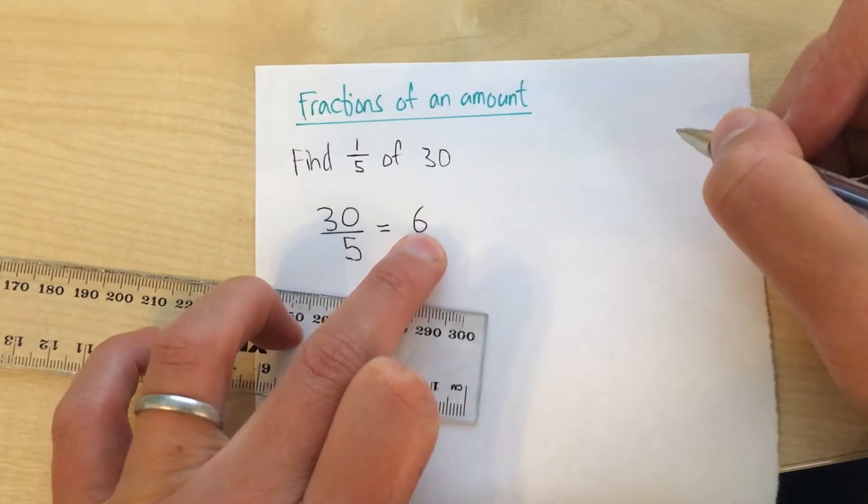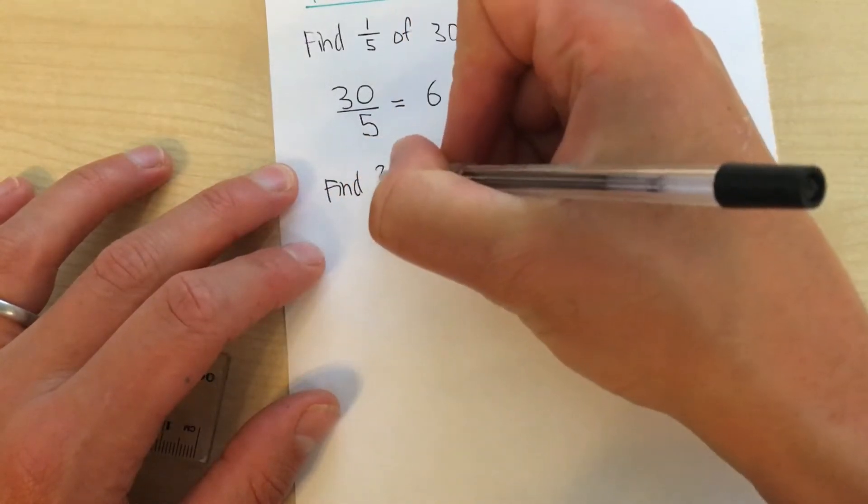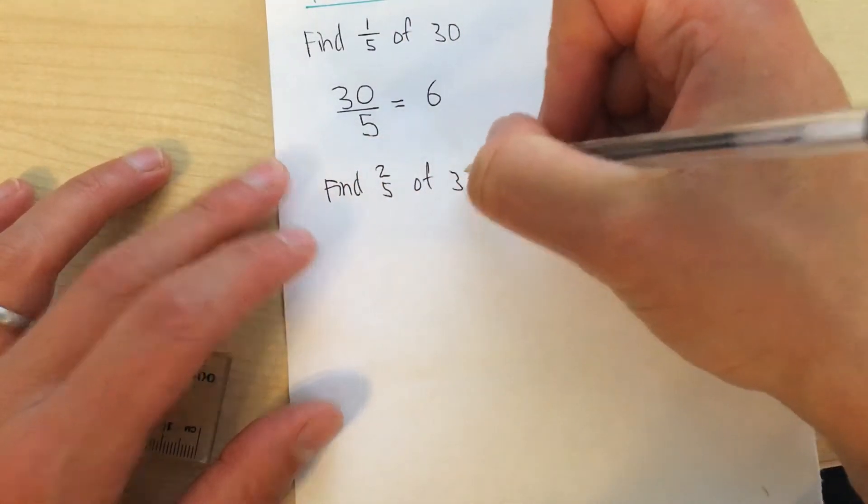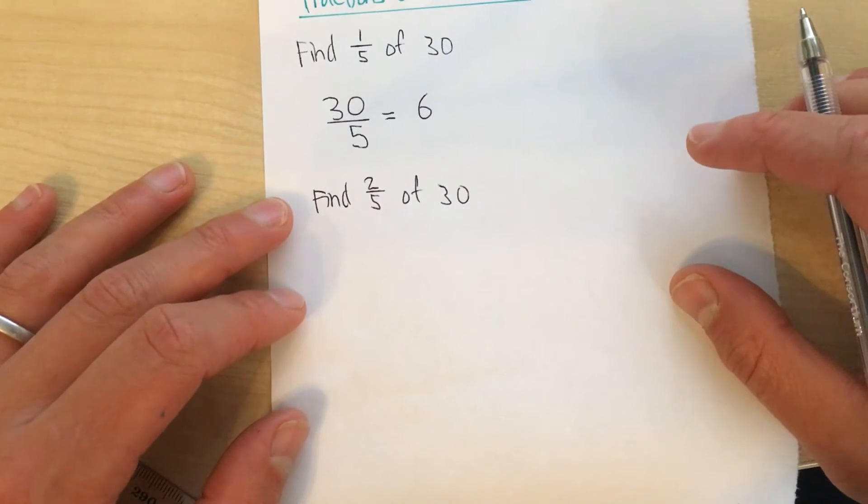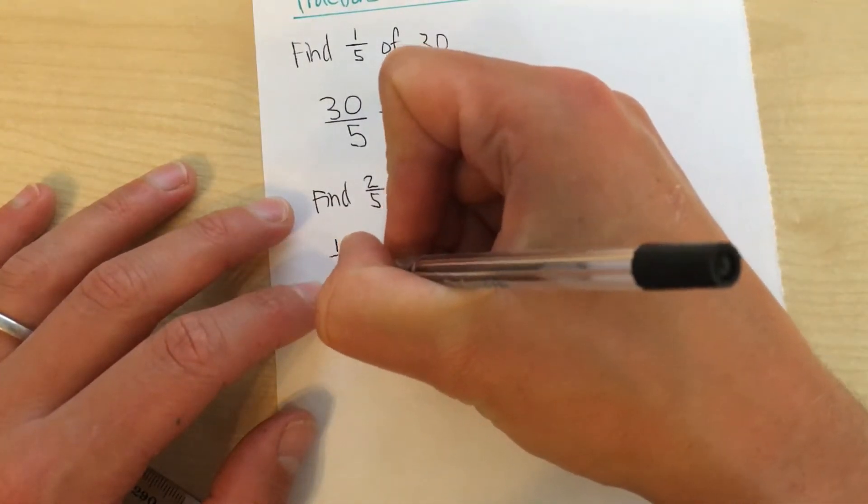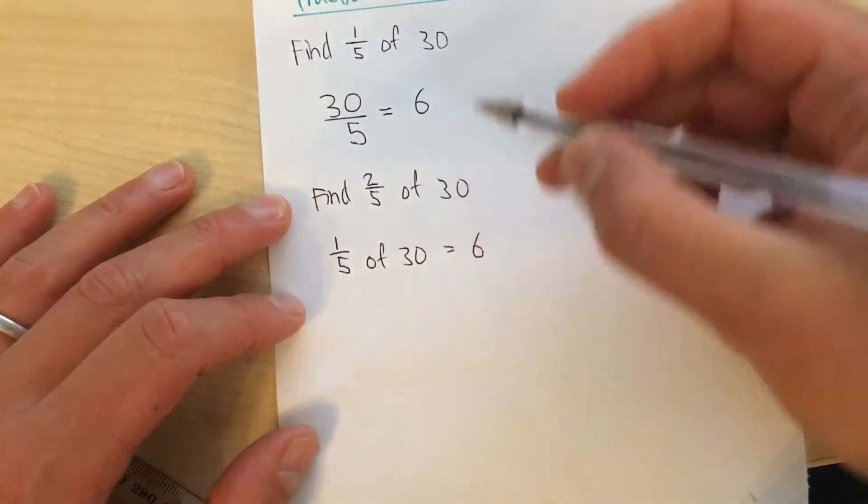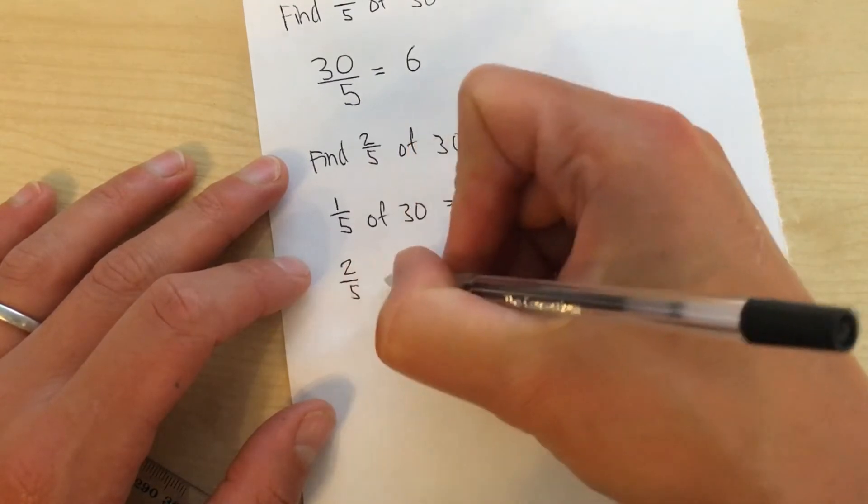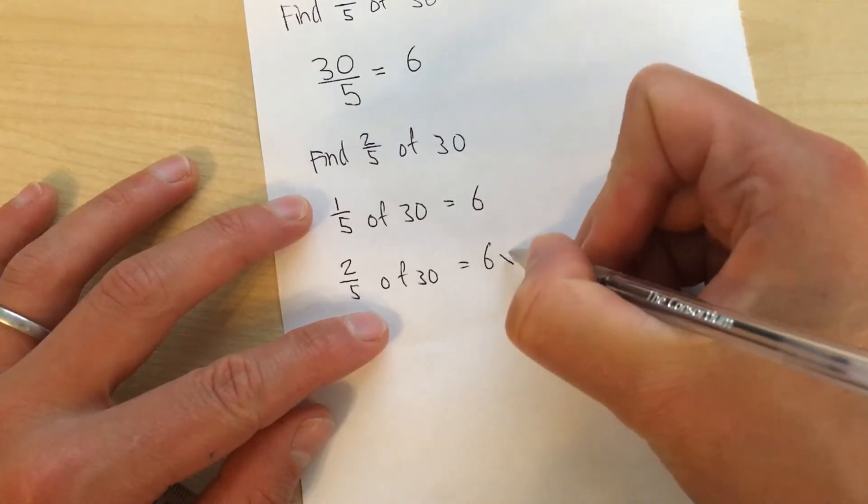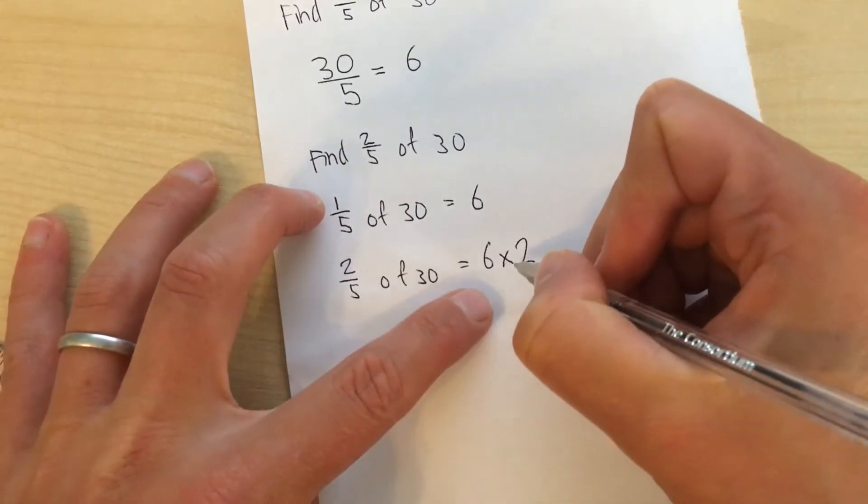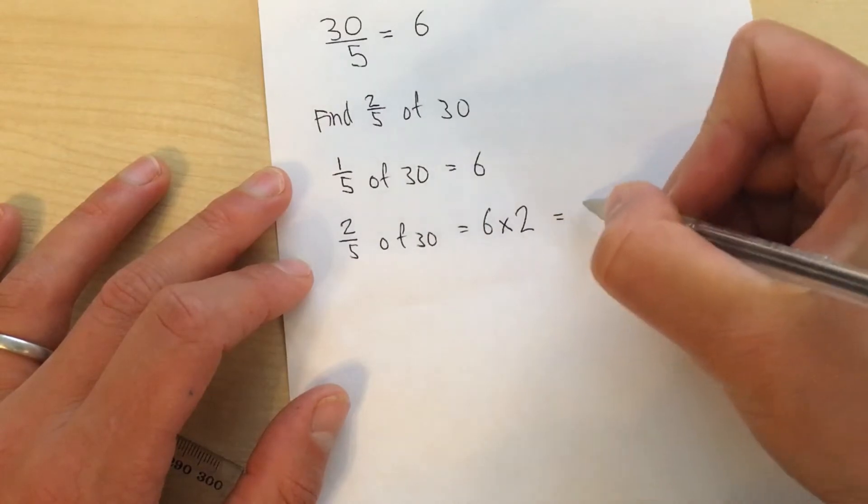Because 6 multiplied by 5 is 30. If I wanted to find 2 fifths of 30. First of all, I need to find 1 fifth. I've got this already. 1 fifth of 30 equals 6. I got that here. 2 fifths of 30 equals 6 multiplied by 2. Because I've got 2 lots of 1 fifth. So 2 fifths of 30 equals 12.